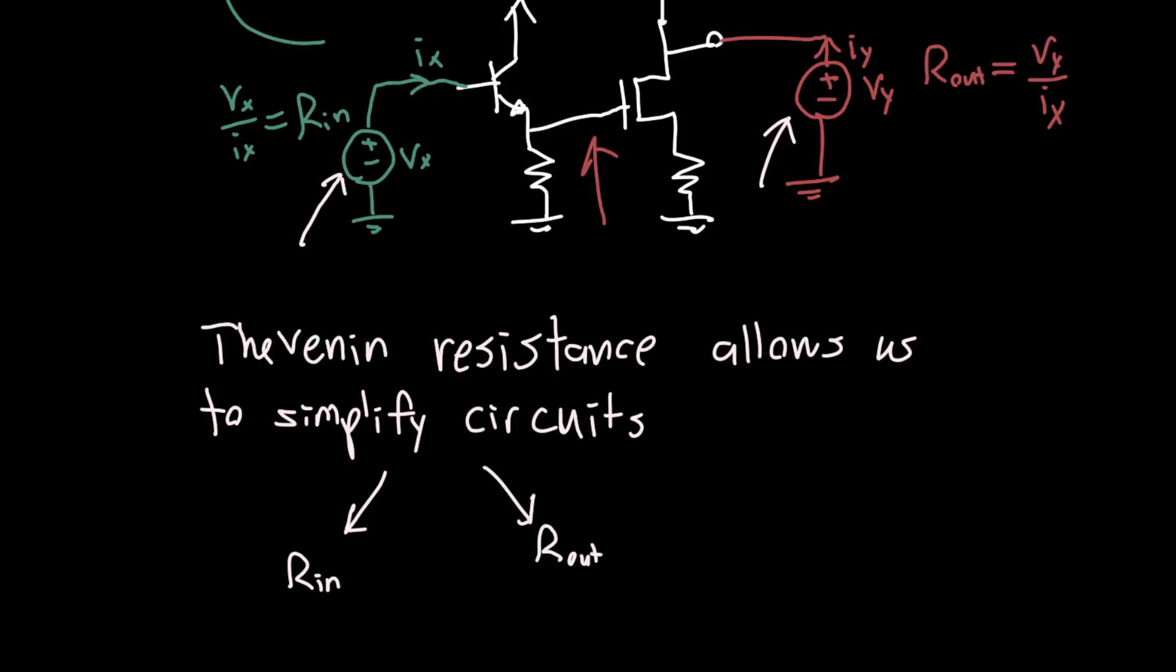And after doing the analysis for a bunch of these circuits, you'll start to notice some patterns. It allows us to simplify circuits beautifully. So you'll start to notice patterns like the output resistance of certain kinds of amplifiers always looks the same, or the input resistance always looks the same, or perhaps other Thevenin resistances start to look really similar.